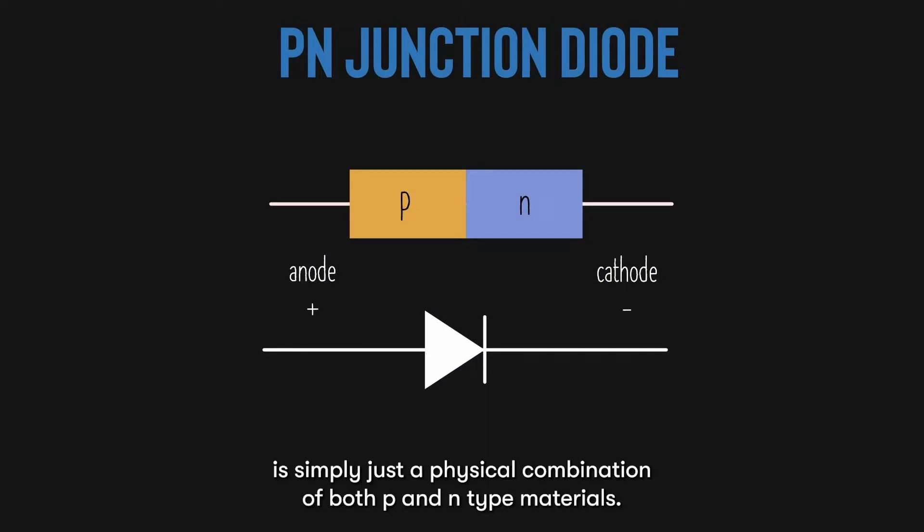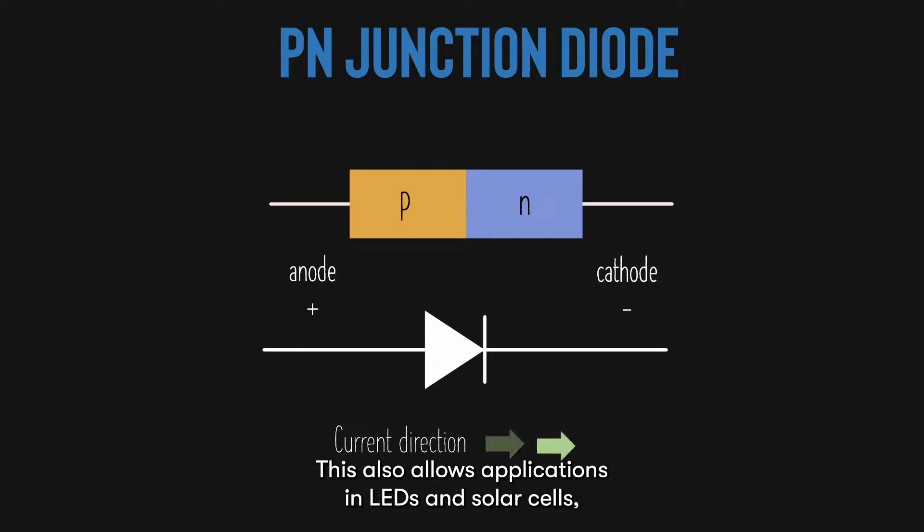PN junction diode is simply just a physical combination of both p- and n-type materials. It is widely used in the semiconductor industry, for example in logic gates, mainly to allow current to flow in only one direction. This also allows application in LEDs and solar cells, which is why in order to understand how solar cells work, we need to first understand p-n junction diodes.